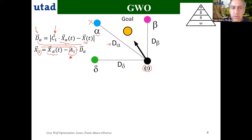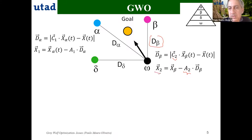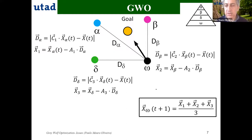After evaluating the contribution from the alpha wolf for the movement of the omega, we do the same for beta and delta. For beta, we evaluate the distance using C2 and A2, giving contribution X2. Similarly, the contribution from delta for the movement of the omega is X3. After evaluating X1, X2, and X3, we take the average of these three values, and that average determines the new position of the omega wolf.